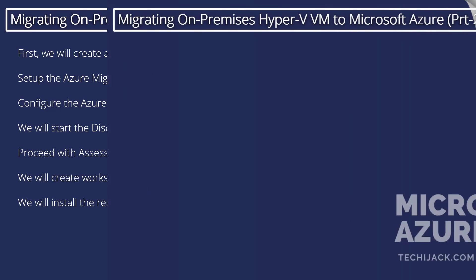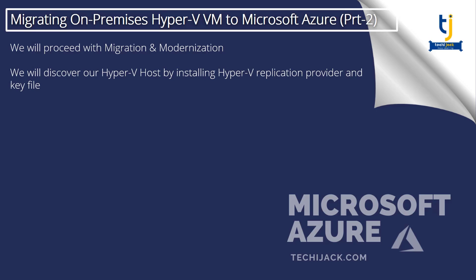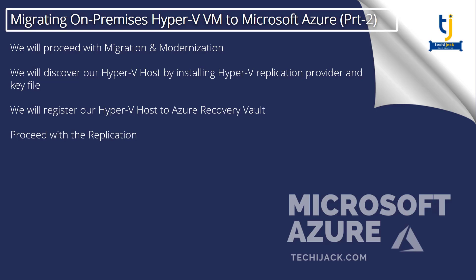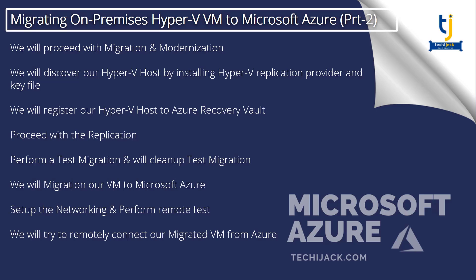In our second part, we will proceed with migration and modernization. We will discover our Hyper-V host by installing the Hyper-V replication provider and key file, and register our Hyper-V host to the Azure Recovery Vault. Then we will proceed with replication. After that, we will perform a test migration and clean up the test migration, then migrate our VM to Microsoft Azure. Finally, we will set up the networking, perform the remote test, and remotely connect to our migrated virtual machine from Azure.